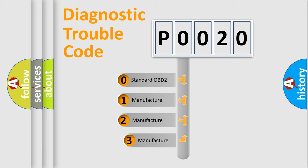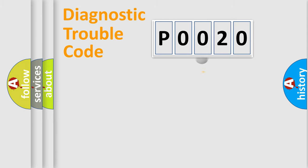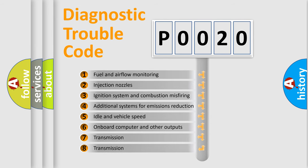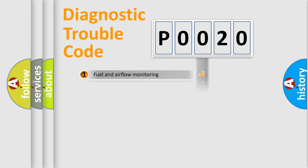If the second character is expressed as zero, it is a standardized error. In the case of numbers 1, 2, or 3, it is a manufacturer-specific error. The third character specifies a subset of errors. The distribution shown is valid only for the standardized DTC code.